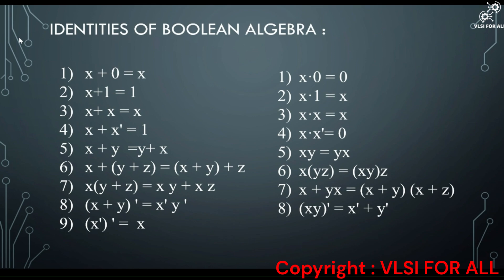Boolean algebra is a set of rules used to simplify a given logic expression without changing its functionality. These rules are used to simplify or minimize the given logic expression. To learn them, we need to know some identities. First: X dot 0 = X (identity law). Next: X plus 1 = 1 (dominance law). Next: X plus X = X (idempotent law). Next: X plus X̄ = 1 (complement law).